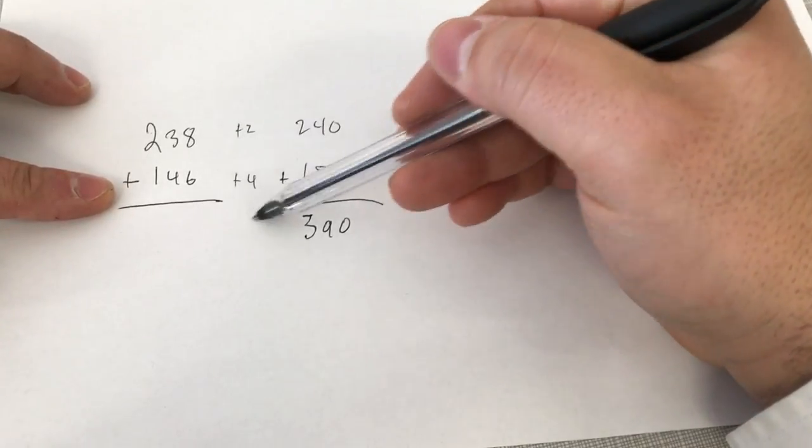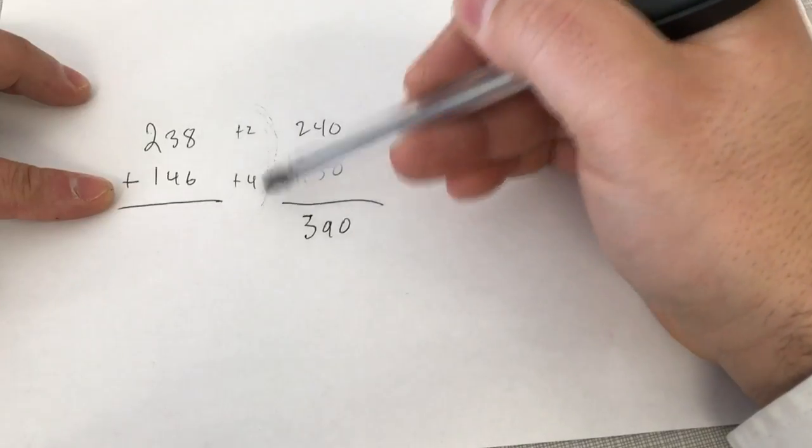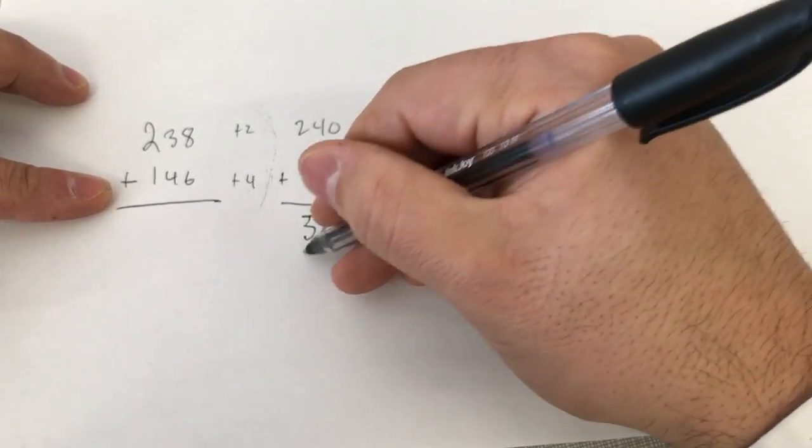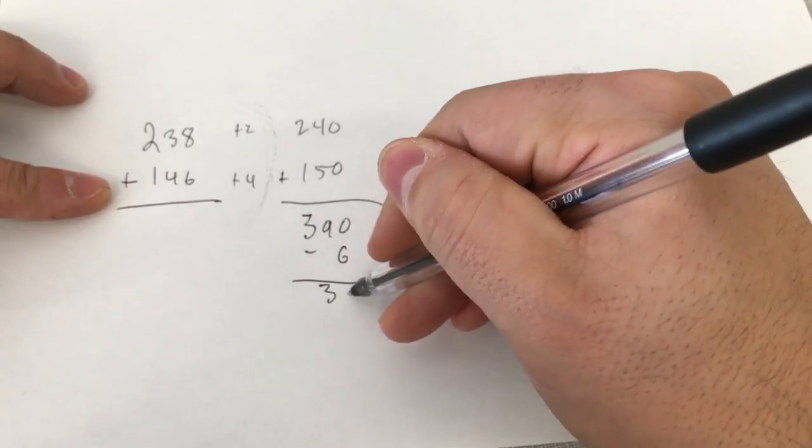And then you're going to subtract what you used, the numbers that you used to round up. So we have 2 and 4, which together make 6. So we're going to subtract 6 from this, which brings our total to 384.